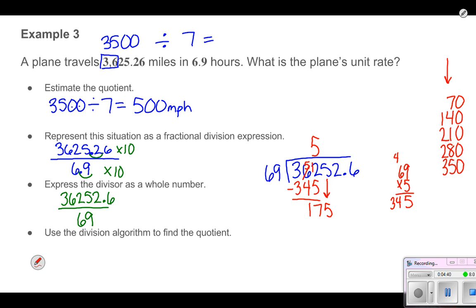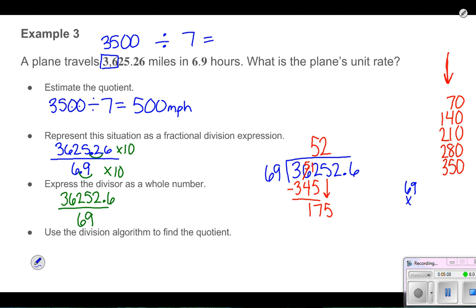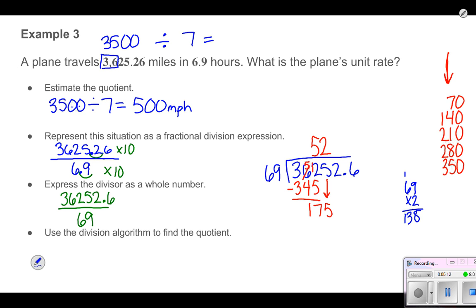I can bring down my next digit, which is a 5. So now I'm looking at how many sets of 69 I can get out of 175. I'm going to look up here and look at my sets of 70 that's going to help me get in the ballpark. I can see if I had 2 sets, it's 140. That's going to be really close. 3 sets was too high. So I'm going to try 2 sets. 9 times 2 is 18, so 138. I'm going to subtract 138 from 175. 15 minus 8 is 7, 6 minus 3 is 3. So 37 is still less than 69, so I'm doing good.